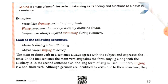Some more examples: Pharaoh likes drawing portraits of his friend. Flying aeroplanes has always been my brother's dream. Sanjana has always enjoyed swimming during summers. In the first sentence, drawing; in the second sentence, flying; and in the third sentence, swimming — are gerunds.